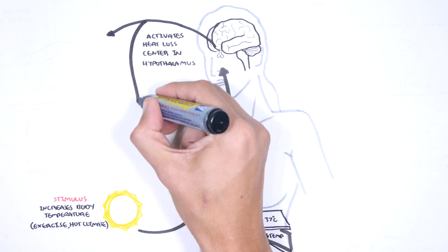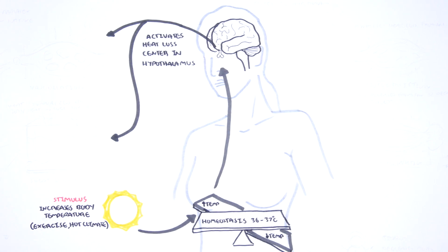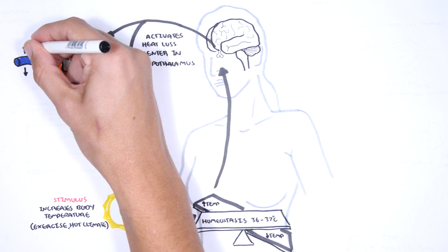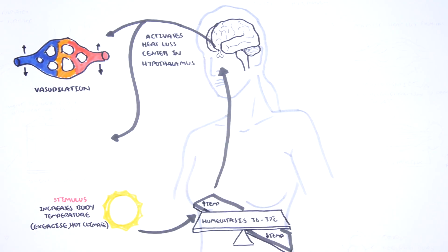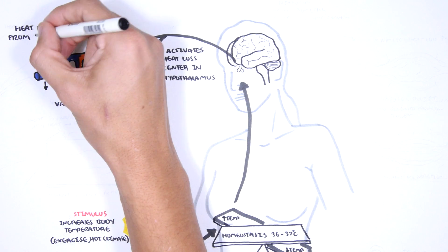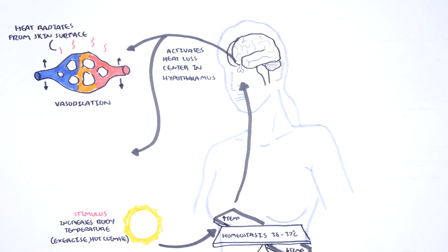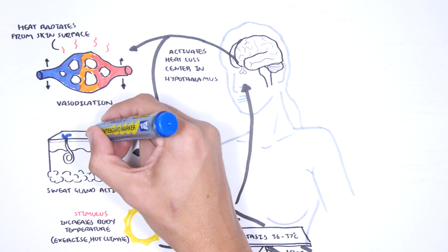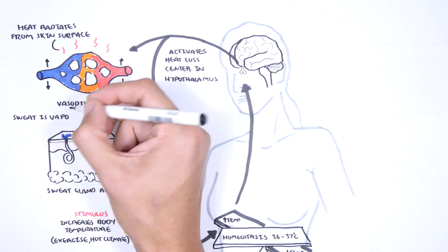The hypothalamus will send signals out that will cause vasodilation, which is widening of the vessels. When blood vessels of the skin dilate, warm blood flows closer to the body surface and loses heat to the surrounding air. If this is not enough to return your temperature to normal, sweating occurs through activation of sweat glands, and sweating is the evaporation of water from the skin and has a powerful cooling effect.